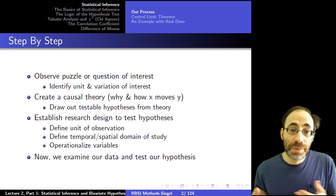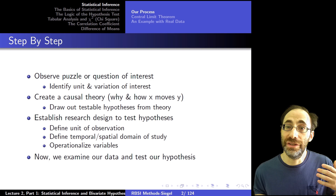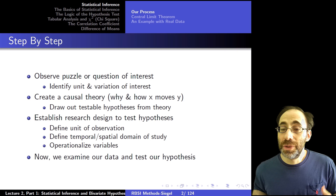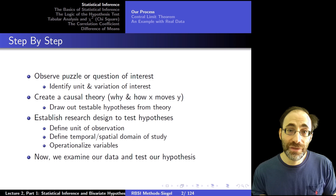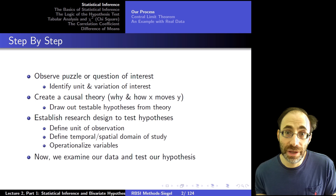Let's start with a review of what we're doing. First, we observe some puzzle or question of interest. This involves identifying your research question, identifying the units of analysis — whether we're looking at the individual level, the state level, the country level — and how that unit is varying temporally across time or across space, or both. Then we create some kind of causal theory about how and why x affects y, how changes in x affect changes in y. This theory should be generalizable beyond the single case you're looking at, and from it we draw out testable hypotheses.